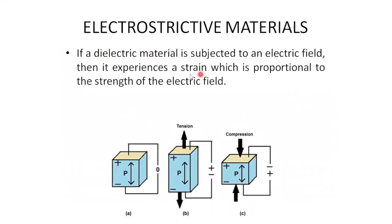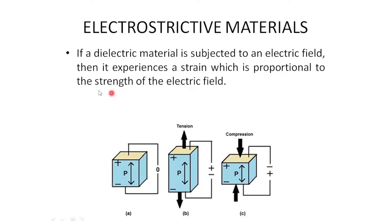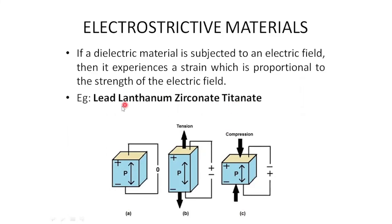For electrostrictive materials, when a dielectric material is subjected to an electric field it experiences strain proportional to the strength of the electric field. In the initial stage there is no current, but when tension or compression is applied, the strength of the electric field changes, allowing strain to be calculated indirectly. A good example is lead lanthanum zirconate titanate (PLZT) and lead magnesium niobate.